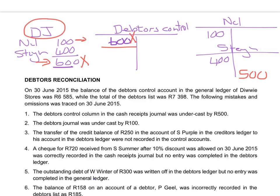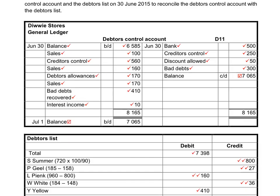Looking at the information provided: the debtors control account has a balance of 6585 and the debtors list has a balance of 7398. That is automatically an indication of a mistake because the two are not the same. We will start the debtors control account with the balance of 6585 and the debtors list with the total of 7398, and then we will correct all the entries.